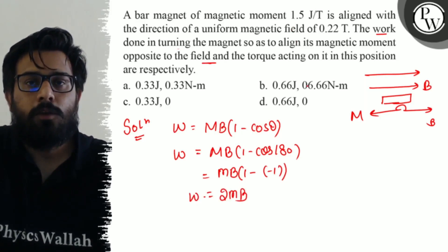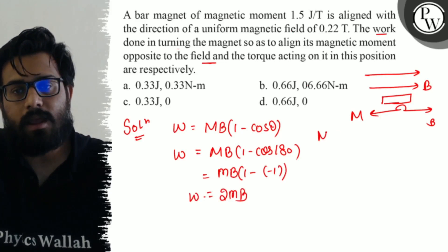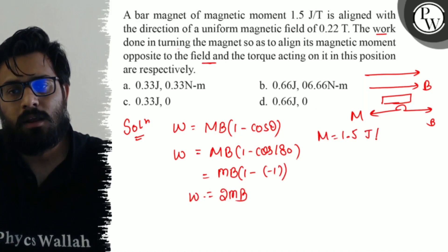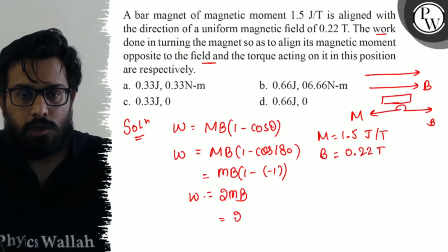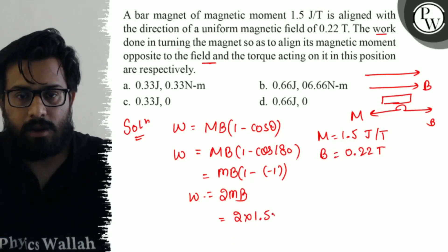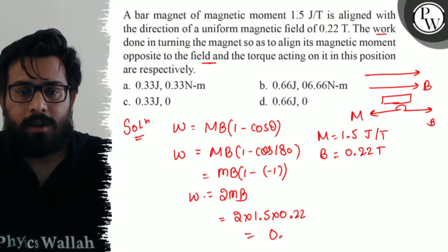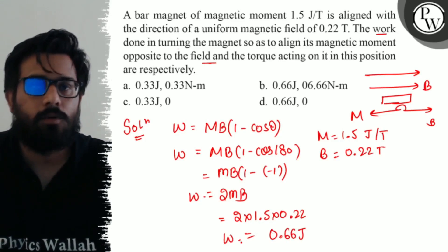Now what is the value of M? You have the value of magnetic moment M as 1.5 Joule per Tesla. You have the value of B as 0.22 Tesla. Putting the values 2 into 1.5 into 0.22, it comes out being 0.66 Joule. So this is the work done.